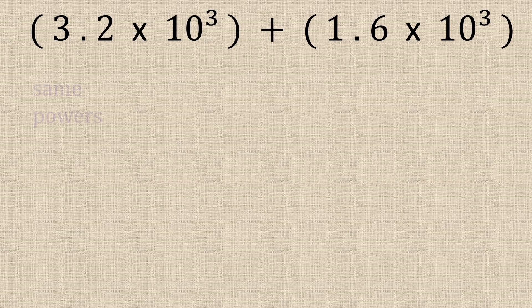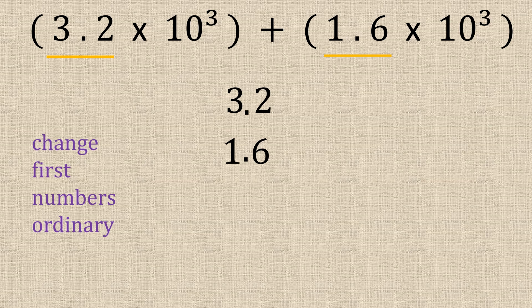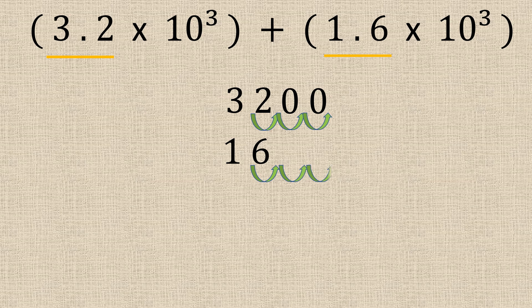And for this one we've got the same powers of 3. So we need to change them to ordinary numbers. So if we write these down and we're going to count 1, 2, 3 and 1, 2, 3.